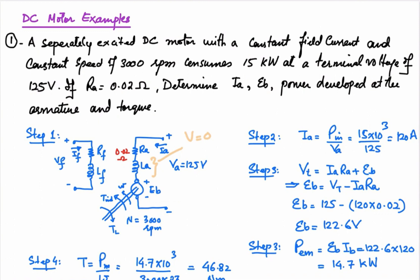We want to determine the armature current, back EMF, power developed, and torque. After drawing the equivalent circuit, we start the analysis. The armature current is determined from the input power. The machine consumes 15 kilowatt at the terminal voltage of 125 volt, so the armature current is Pin divided by Va: 15 kilowatt divided by 125 volt gives 120 ampere. So the armature current is 120 ampere.